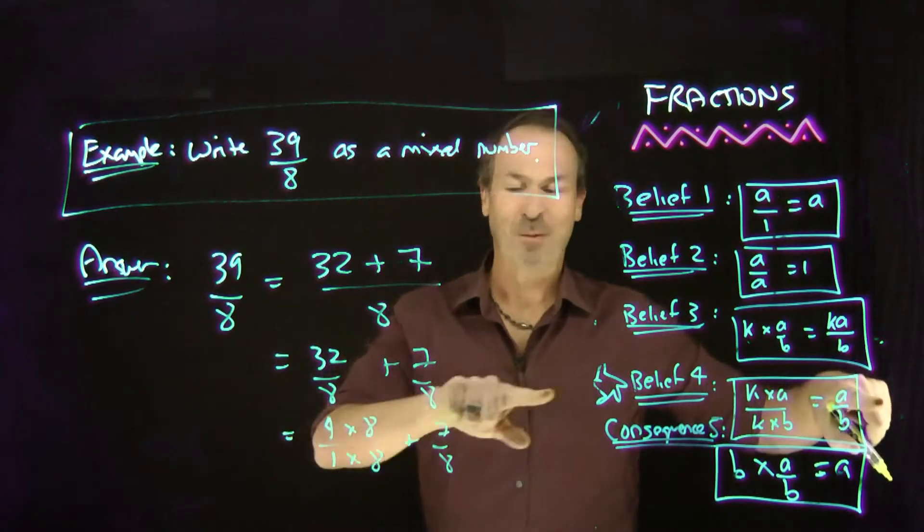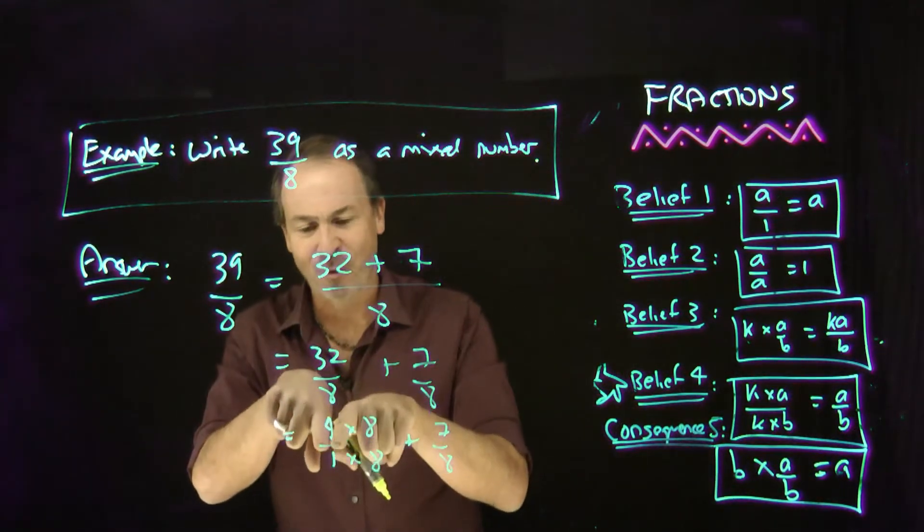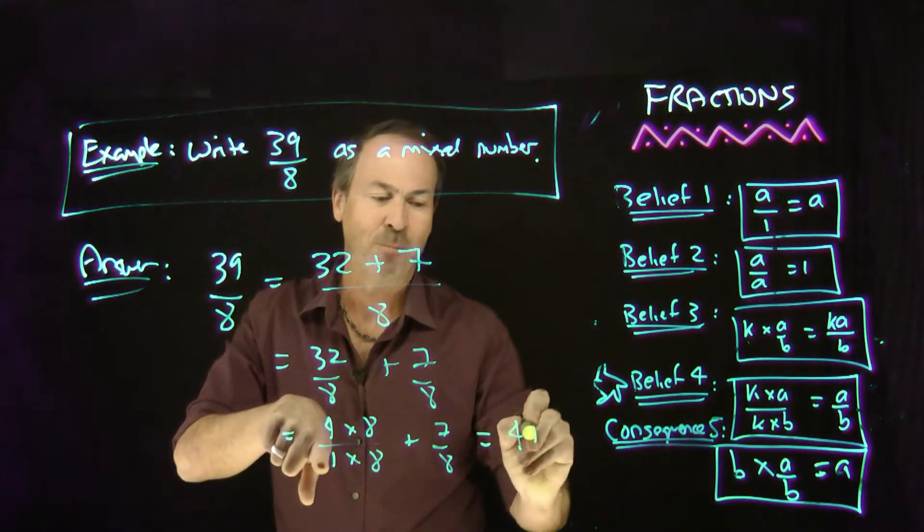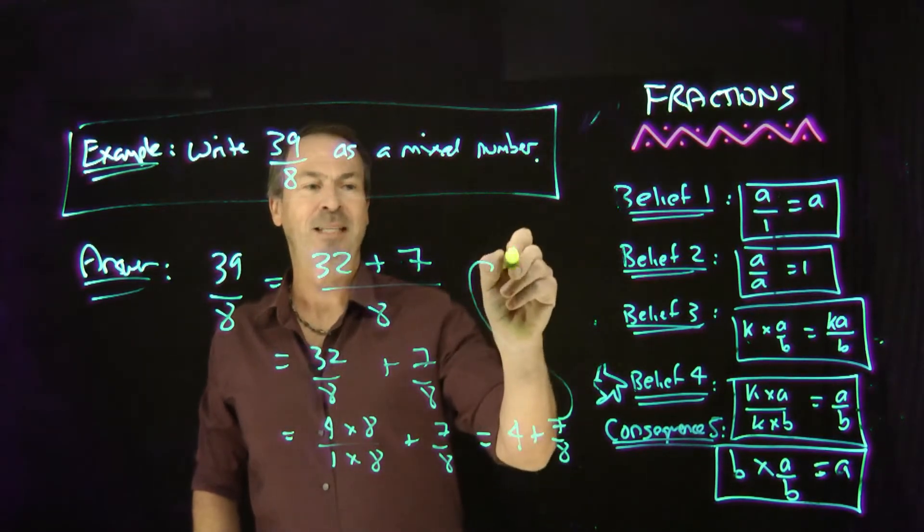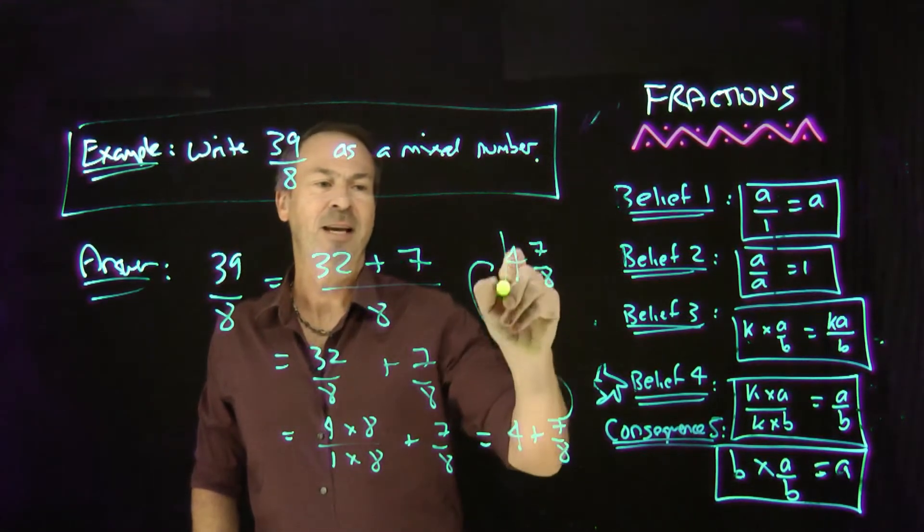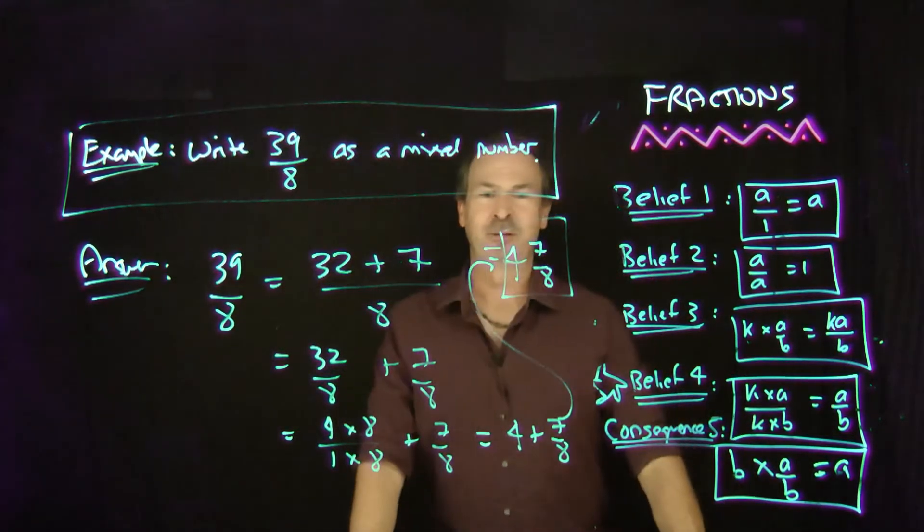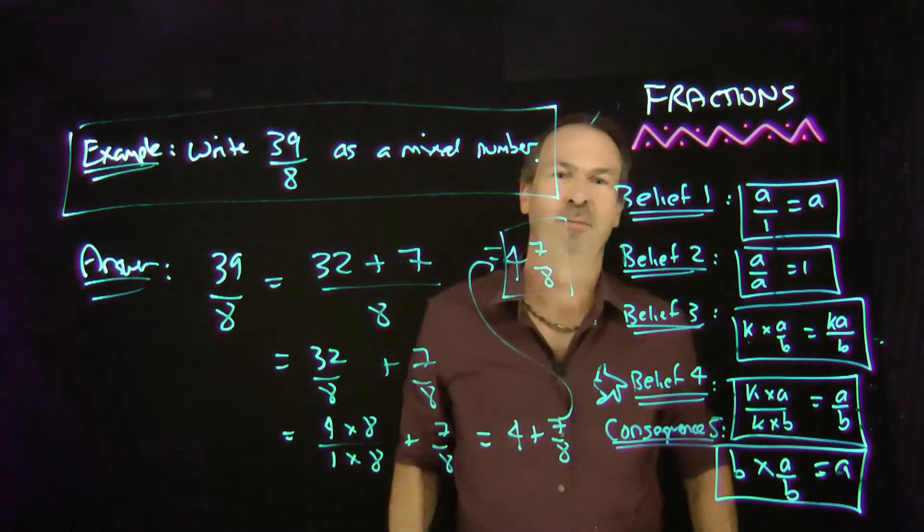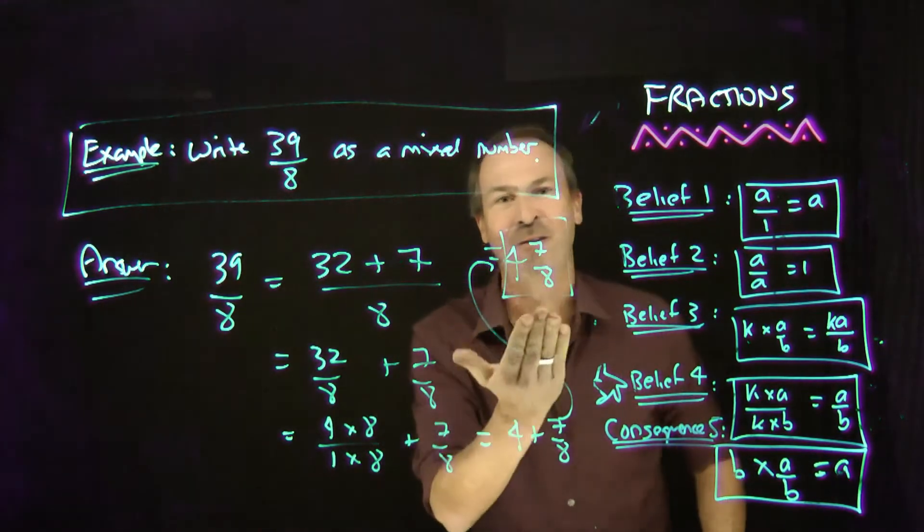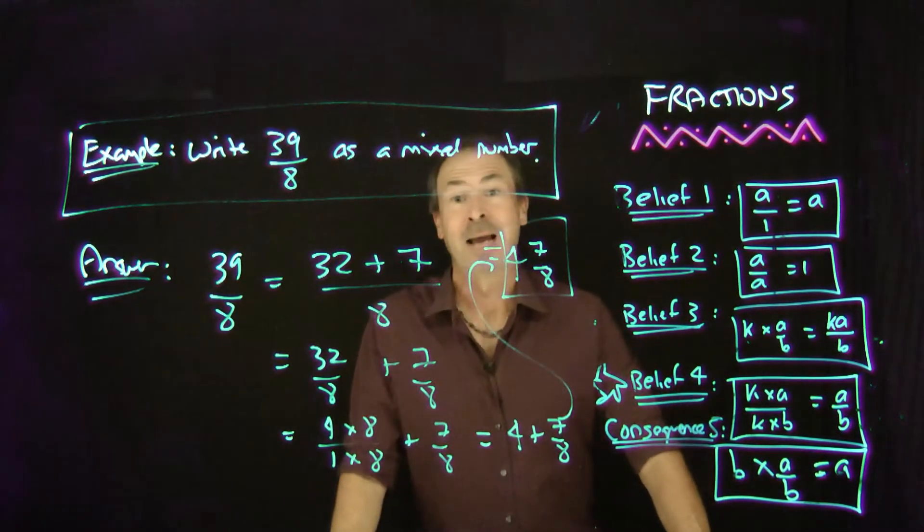By fraction belief number 4, eighths don't matter. This is really 4 over 1, it's really 4 plus 7 eighths. So this is really the mixed number 4 and 7 eighths. So I can see right now it's basically almost 5 pies per student, just shy of 1 eighth of a pie per student. I've got an intuitive feel for that number. That's why people like mixed numbers.